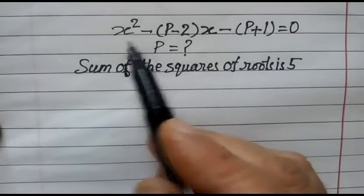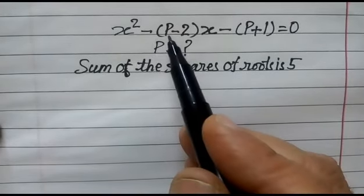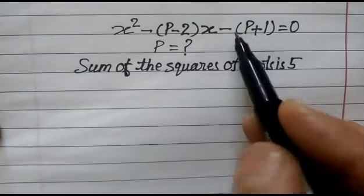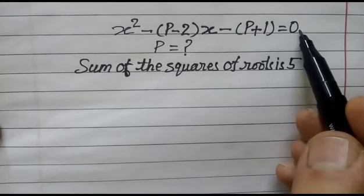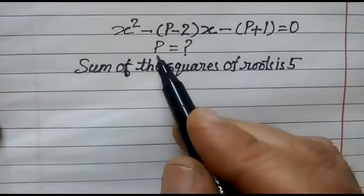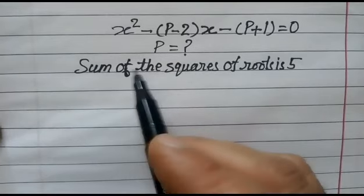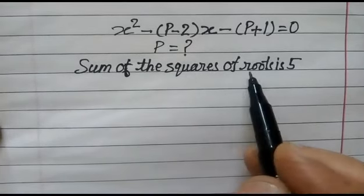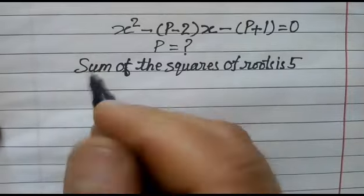Hi friends, we have given the equation x² - (p-2)x - (p+1) = 0. We have to find out the value of p. It is given that the sum of the squares of the roots is 5.